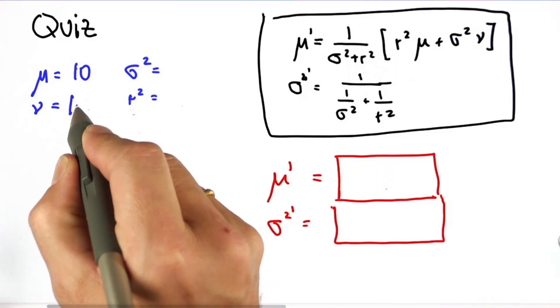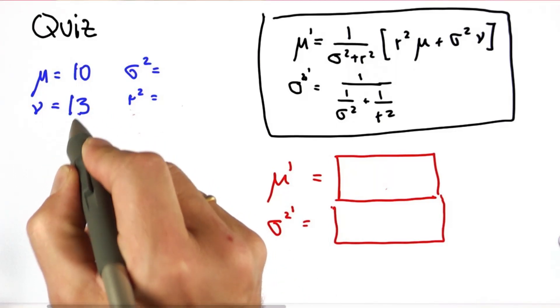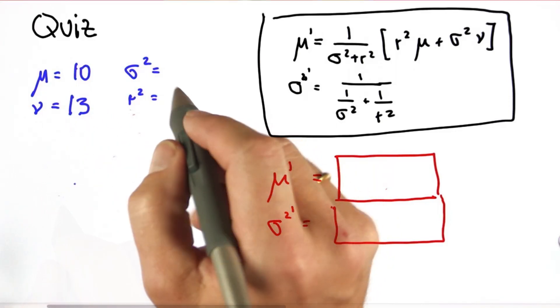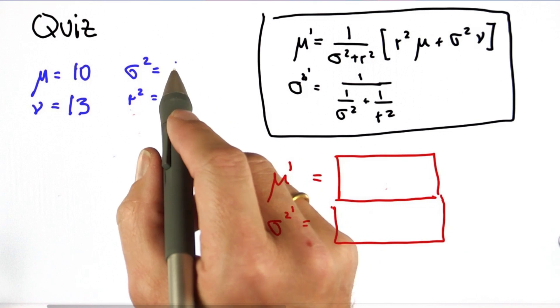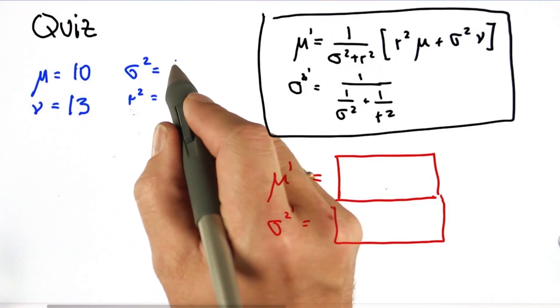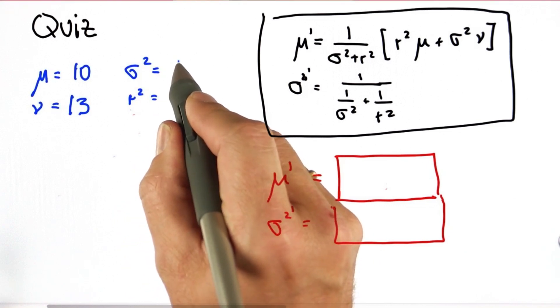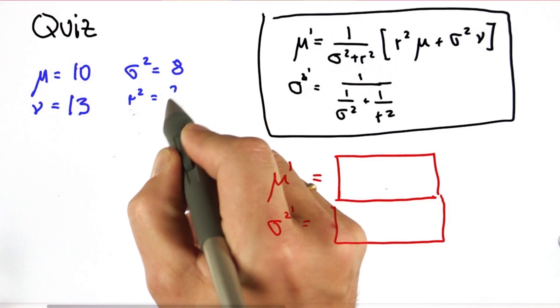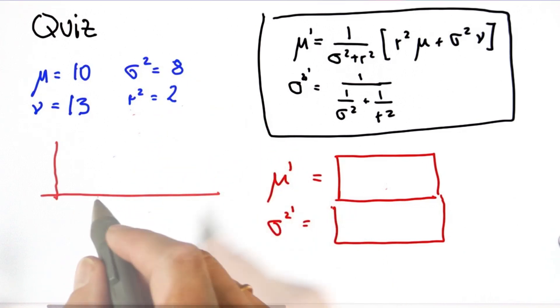Let's do this again. Suppose our means are 10 and 13, and the variances are imbalanced: 8 and 2.